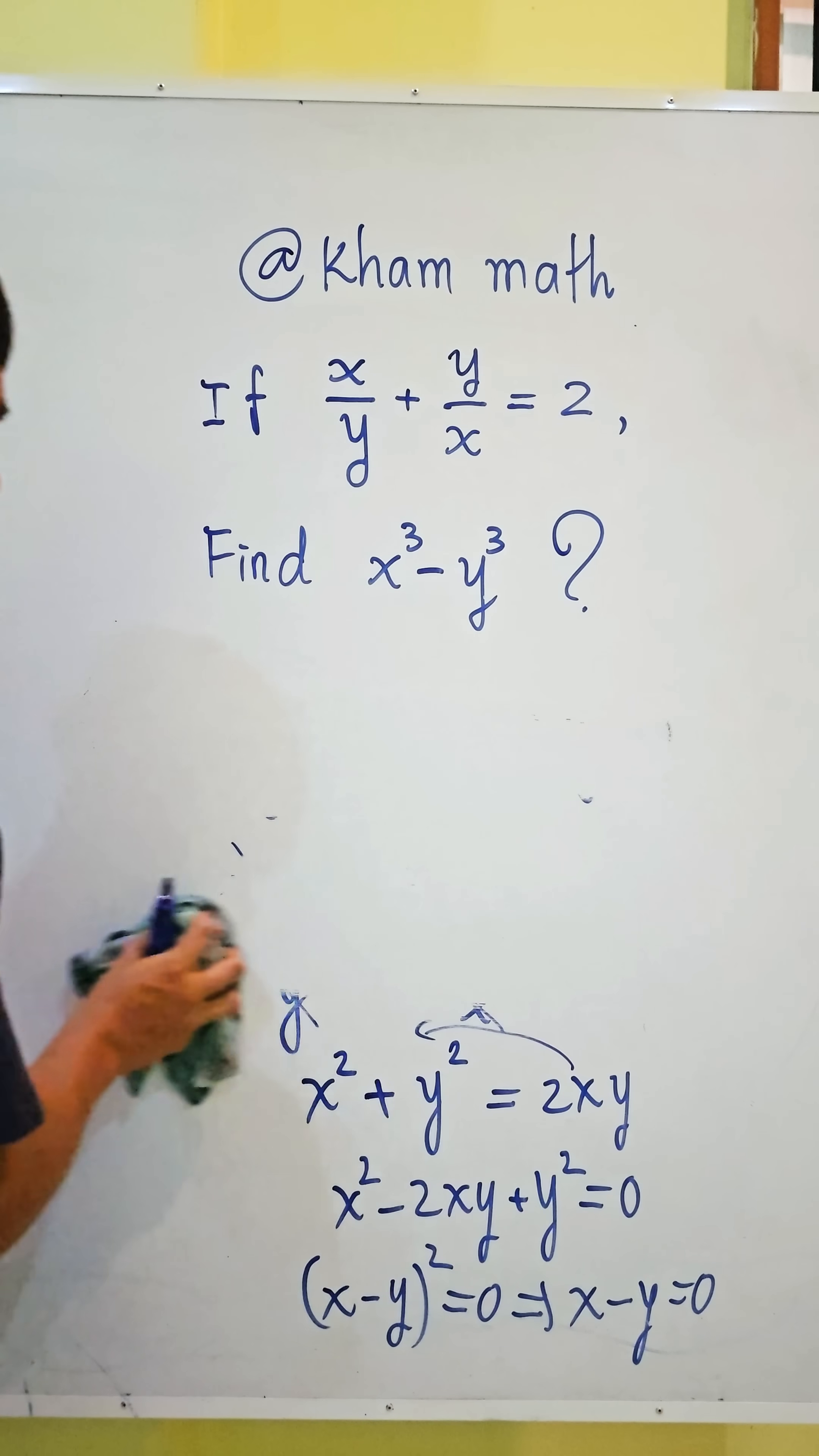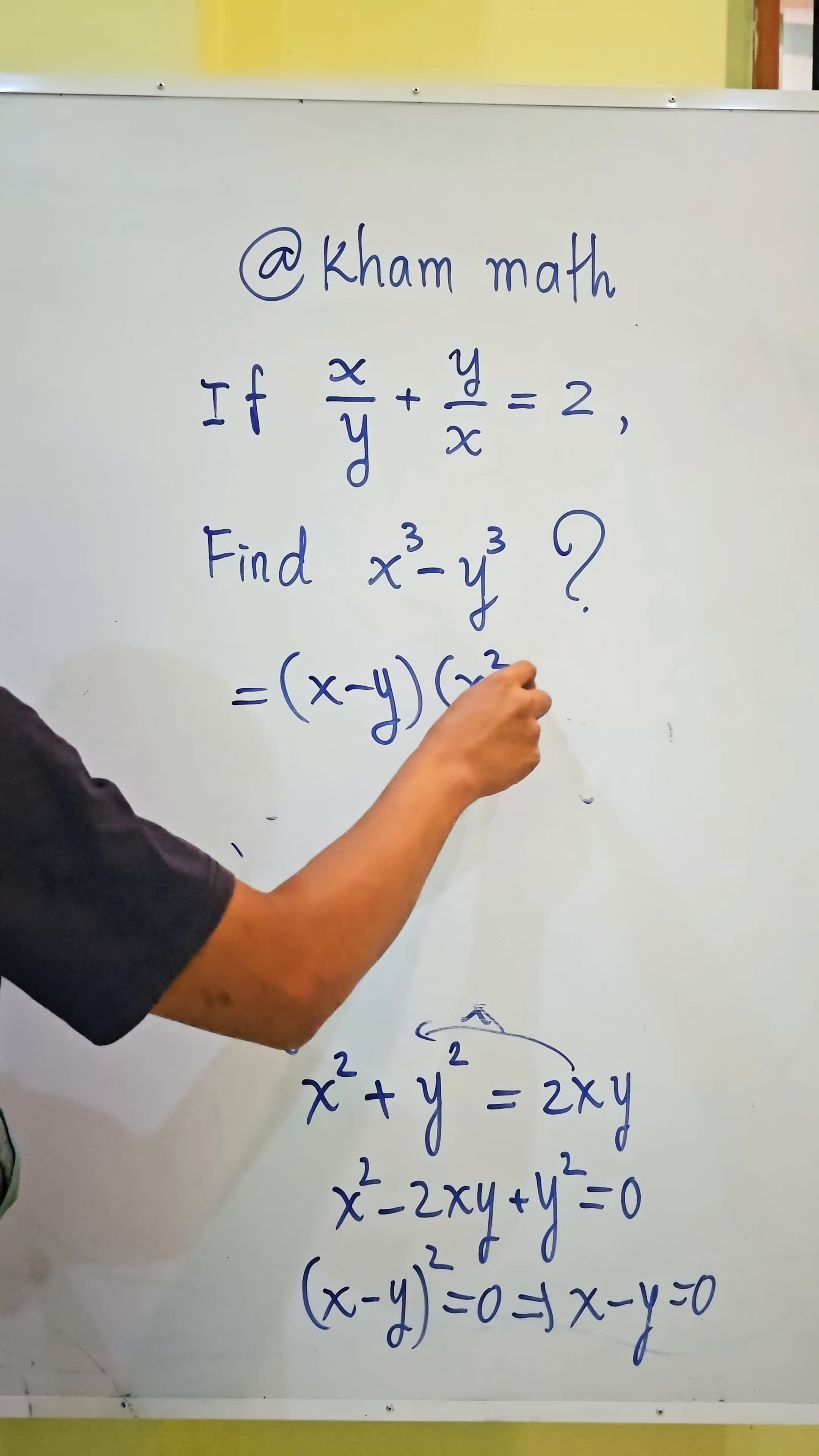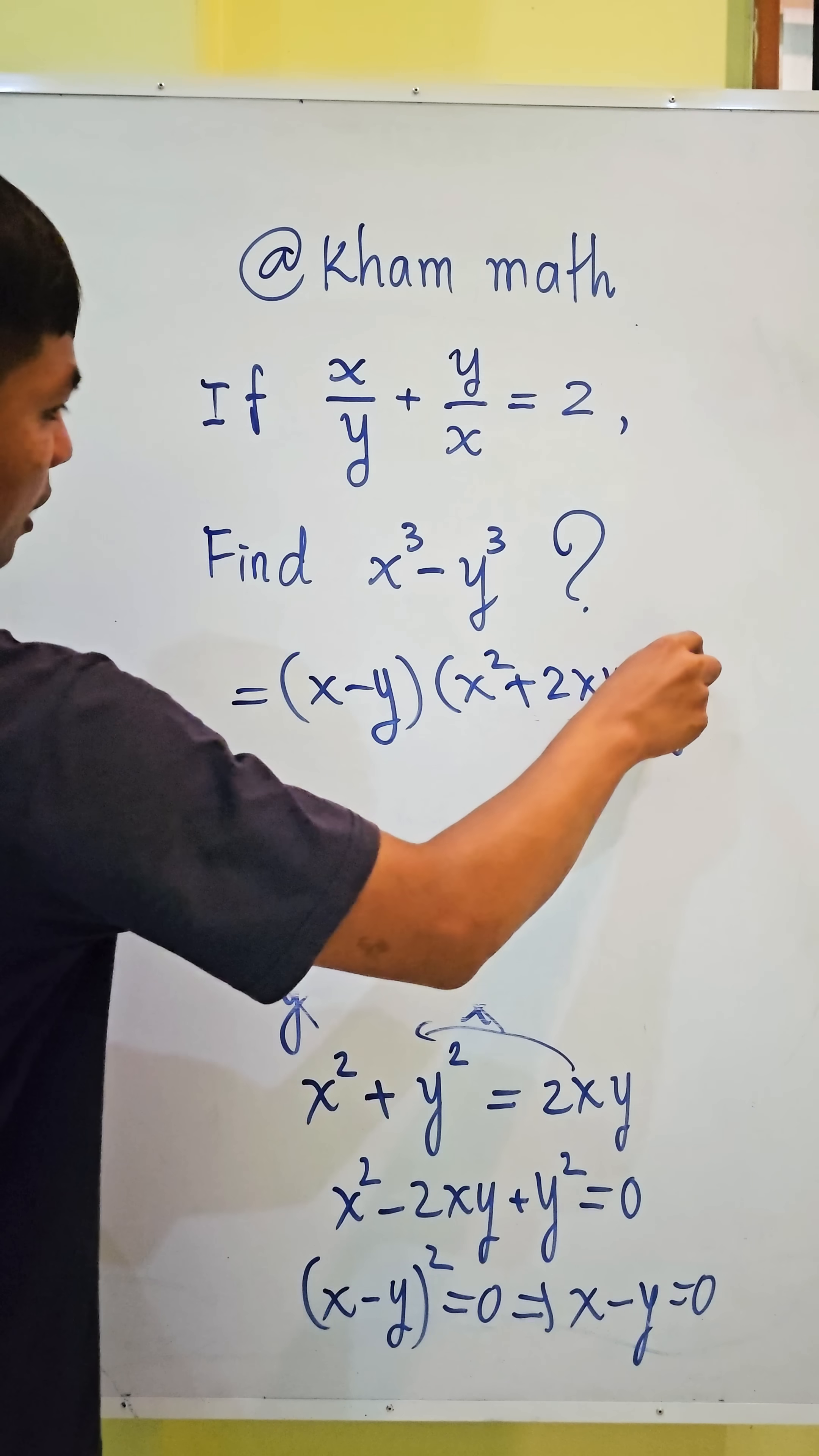We know x³ - y³ equals (x - y) times (x² + 2xy + y²).